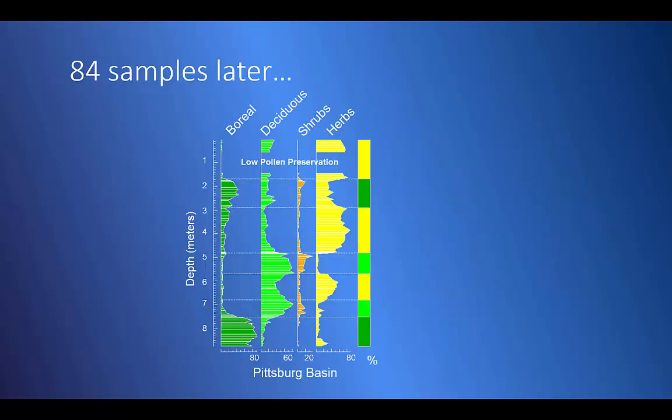However, I analyzed 84 samples in the Pittsburg Basin sediment record. 84 pie charts are going to take a long time to read, and you'll have forgotten the beginning of the story by the time you get to the end. So instead, I graph each type of pollen separately, abundance against depth.